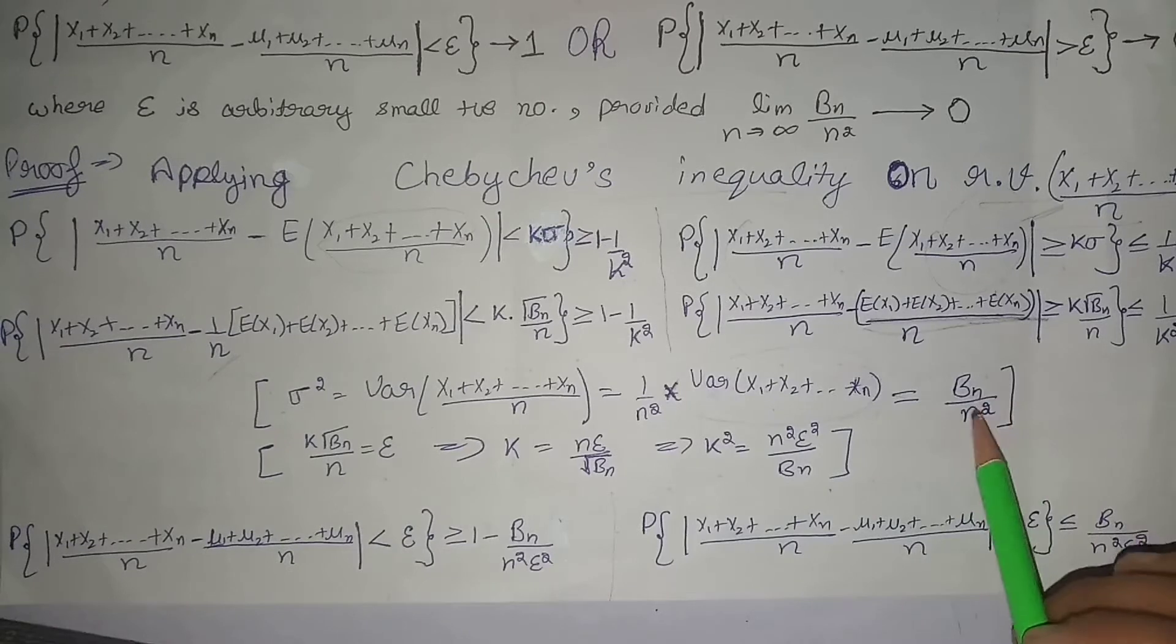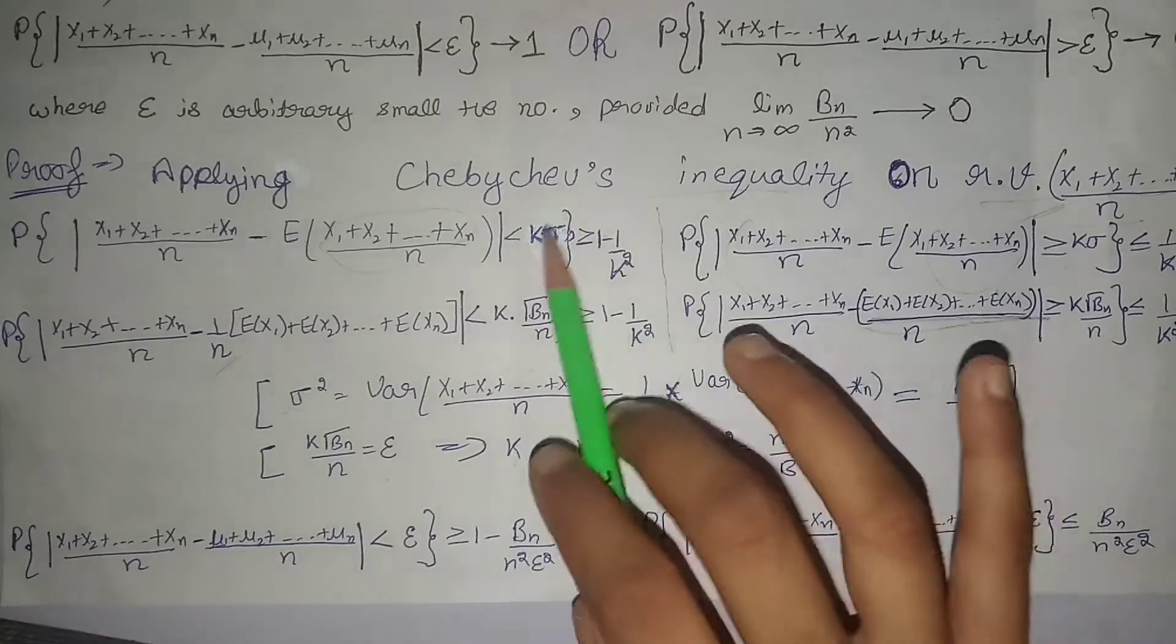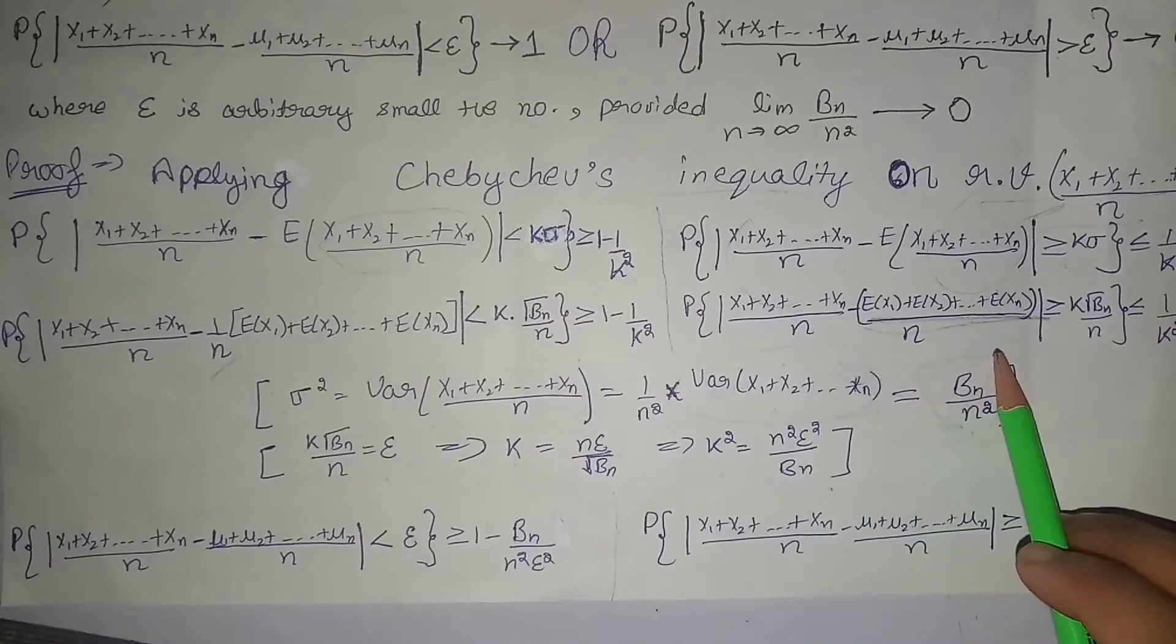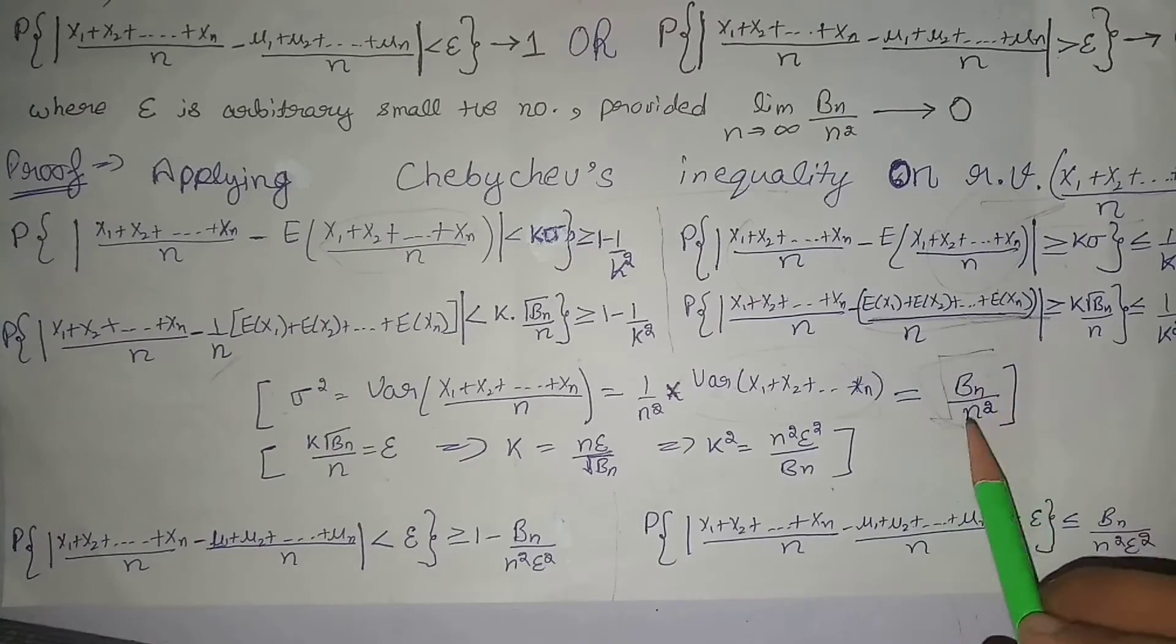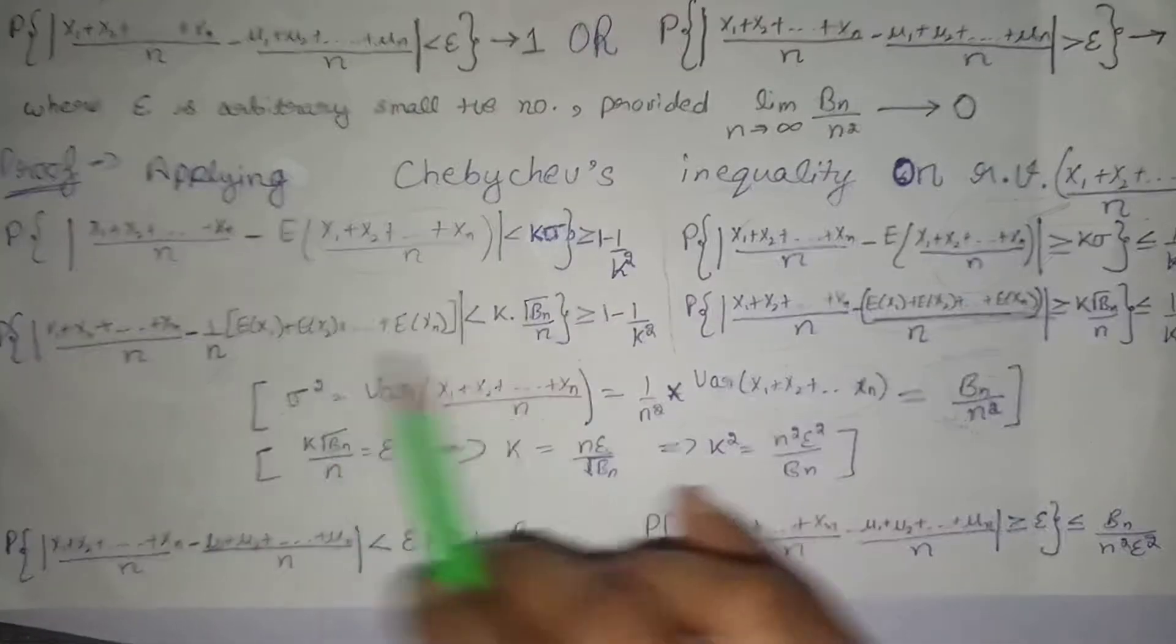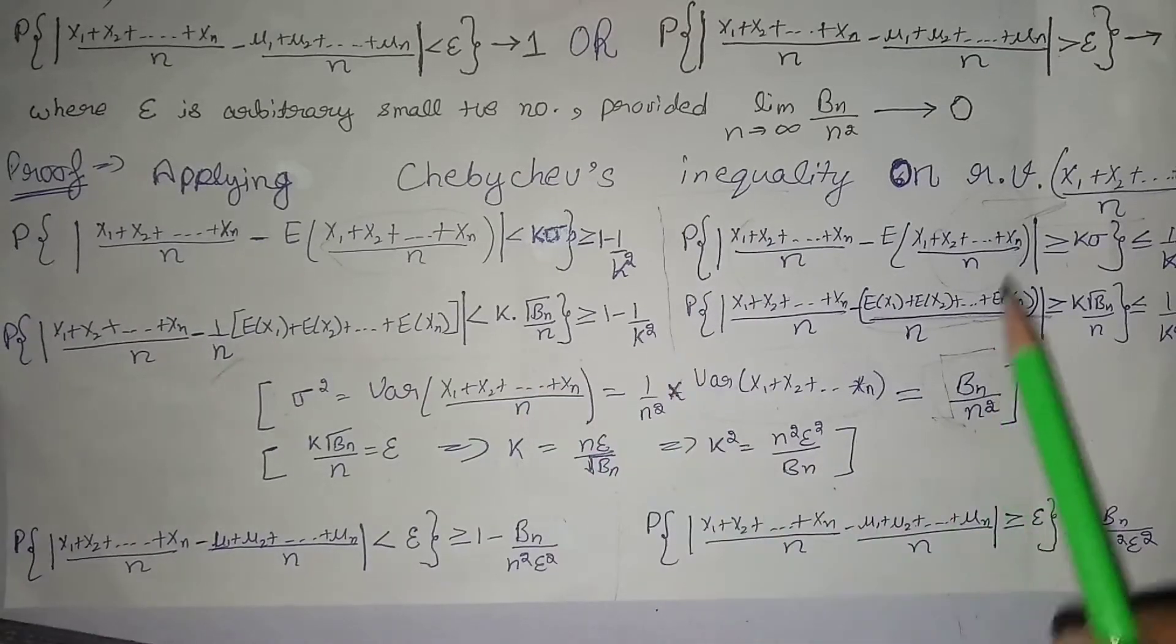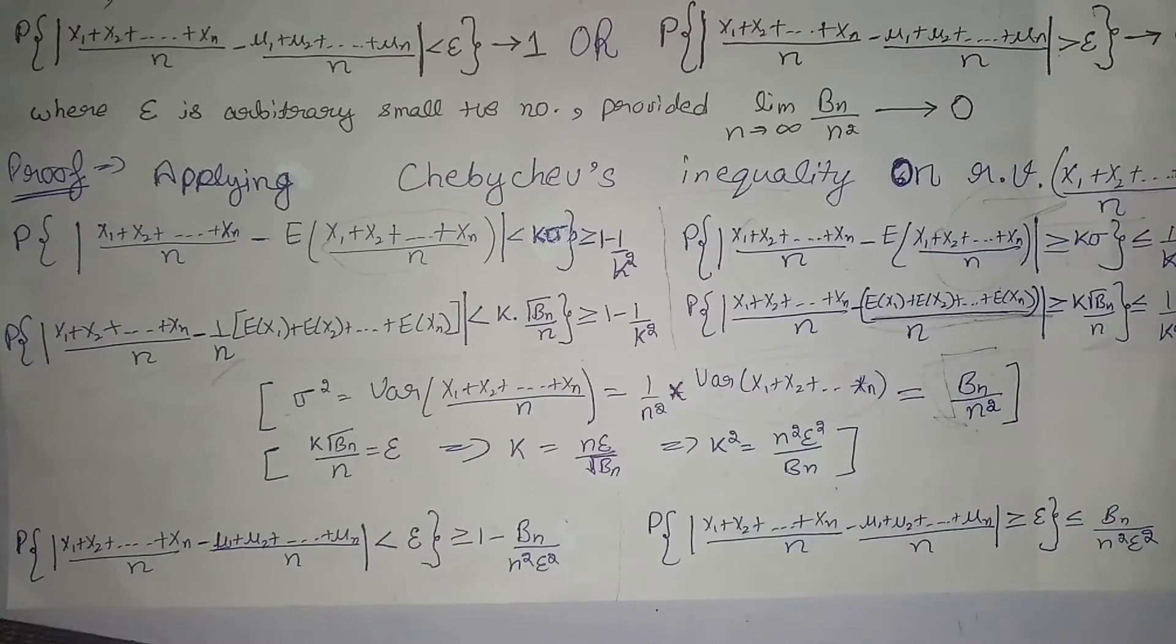Now this is the variance, but we want the standard deviation or sigma, so we will take the square root of this term. When we take the square root, we get square root of bn divided by n. So in place of sigma, we put this term, and the rest remains as it is. Same on this side, in place of sigma we put this term.